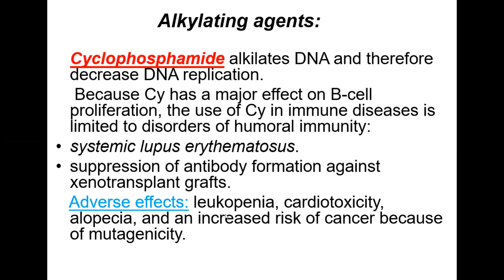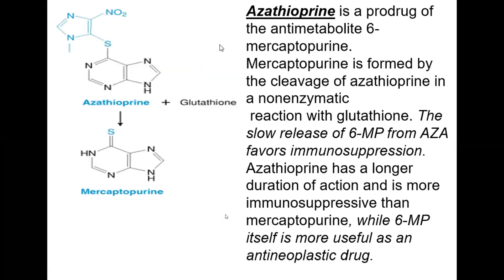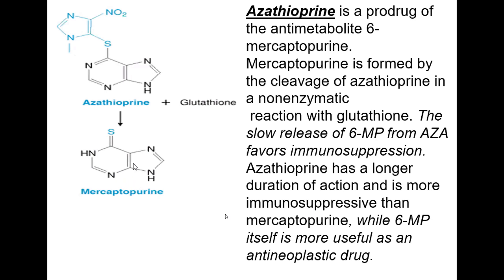Adverse effects of cyclophosphamide include leukopenia, cardiotoxicity, alopecia, and increased risk of cancer due to mutagenicity. Azathioprine is an antimetabolite — a prodrug of 6-mercaptopurine, formed by cleavage of azathioprine in a non-enzymatic reaction with glutathione. The slow release of 6-mercaptopurine from azathioprine favors immunosuppression. Azathioprine has a longer duration of action and is more immunosuppressive than mercaptopurine, while 6-mercaptopurine itself is more useful as an anti-neoplastic drug.